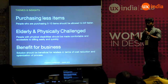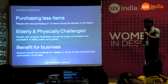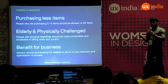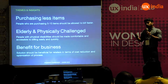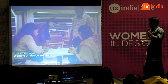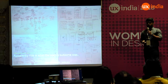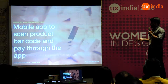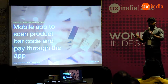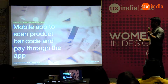These were the themes we identified: the solution should focus on purchasing a few items, be beneficial for elderly and physically challenged people, and benefit the business without being too costly. It had to be a proper optimization of the process and easy to implement. Our team brainstormed all kinds of solutions. The final most viable product we identified was a mobile app to scan product barcodes and pay through the app — a simple solution that could be easily implemented. This exists in the US but India hasn't adopted this infrastructure yet.